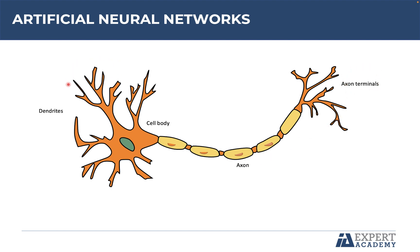The inputs are data from the environment and the output at the end is the final response of the perceptron, such as a prediction of something. In biological networks, electrical signals are transmitted. In artificial neural networks, data is transmitted.